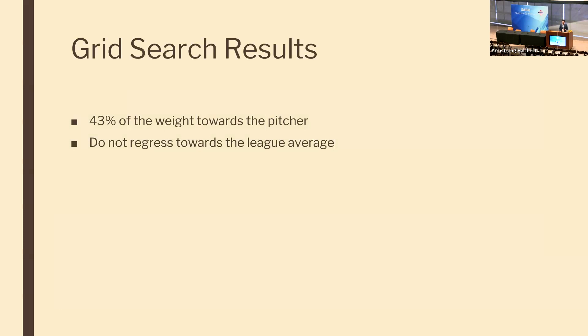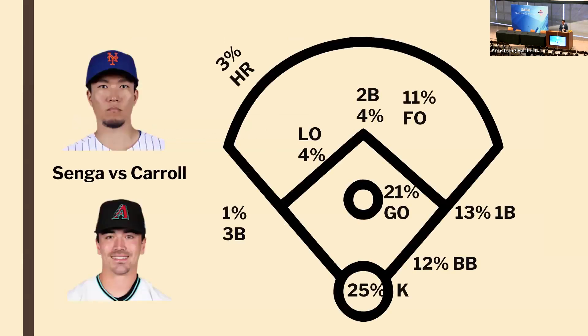I also saw the best results when I added zero regression for both the batter and the pitcher. Here's what it looks like with a matchup between Kodai Senga and Corbin Carroll, using 43% weight for the pitcher and 57% weight for the batter.